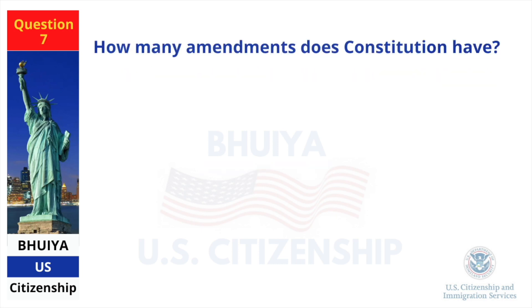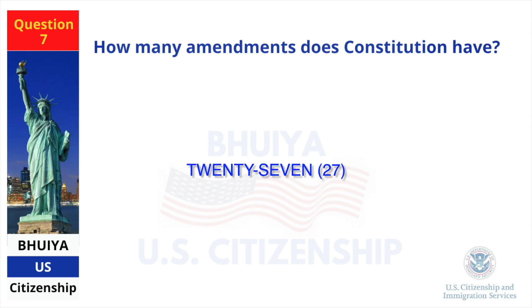How many amendments does the Constitution have? 27.